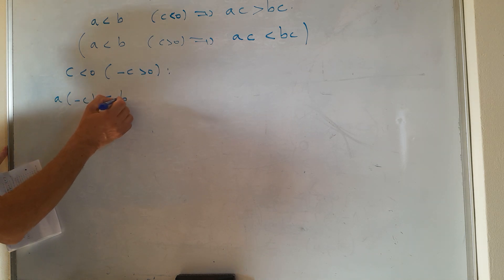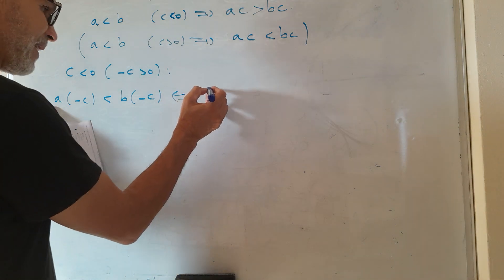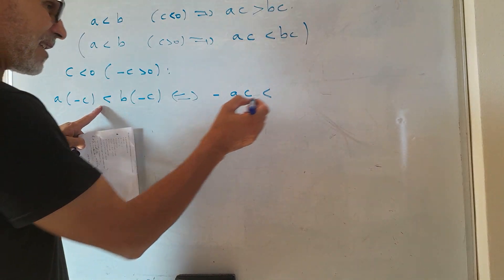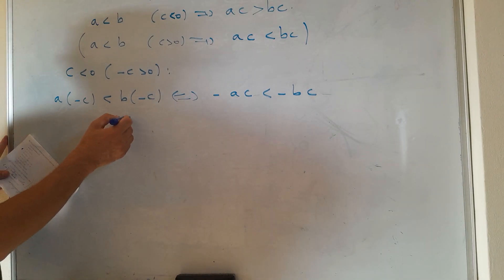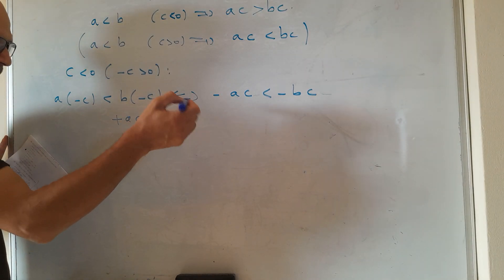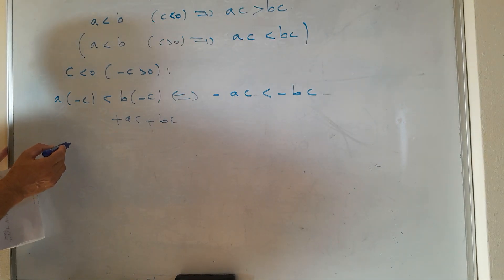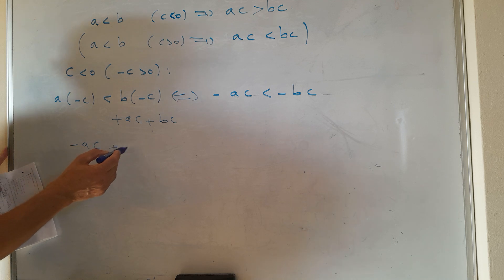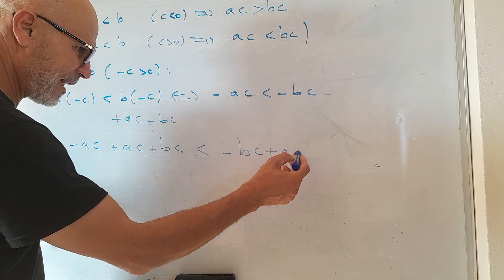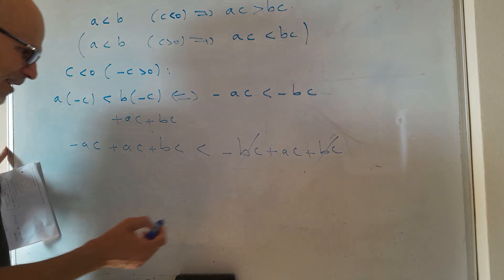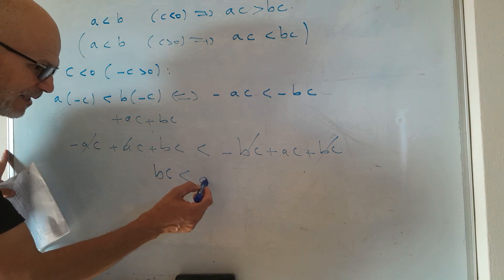So a(-c) is less than b(-c), which means -ac is less than -bc. We add ac and bc to both sides of the inequality. The terms cancel, and we get bc less than ac.